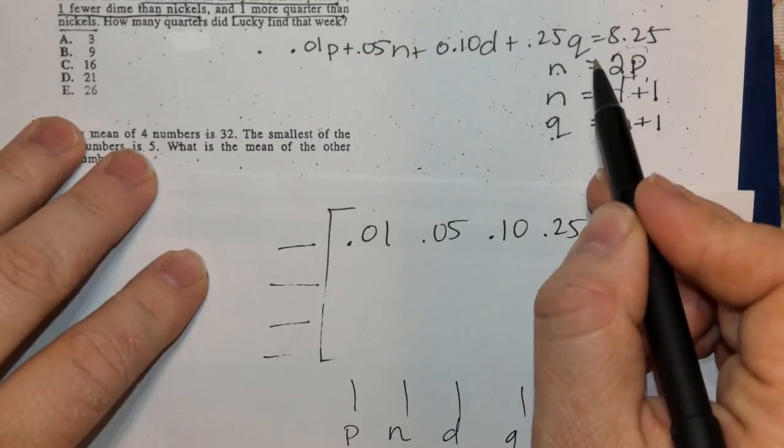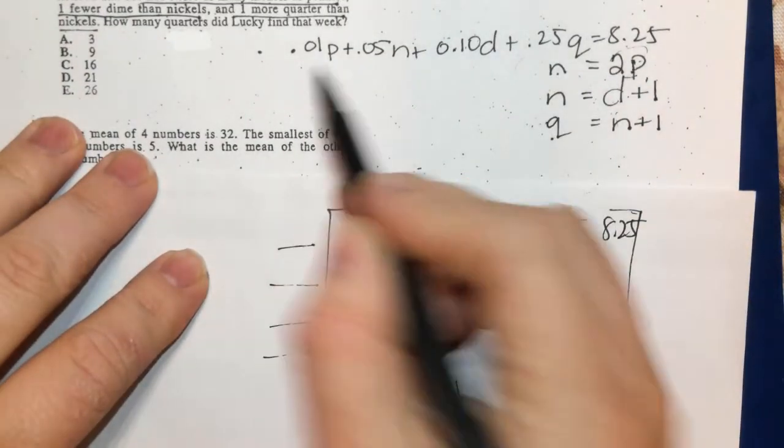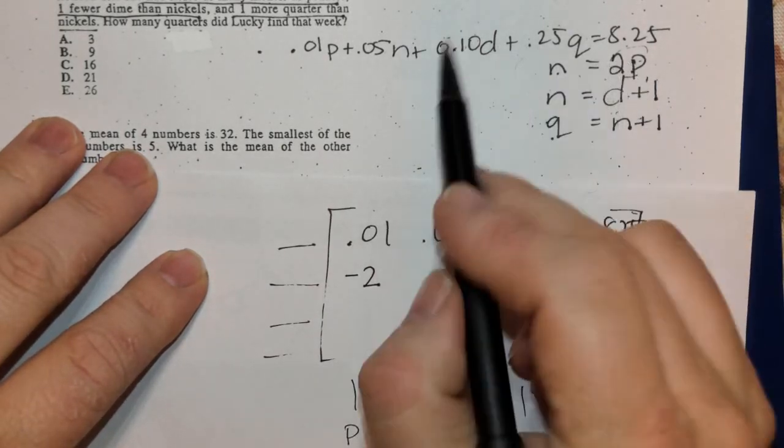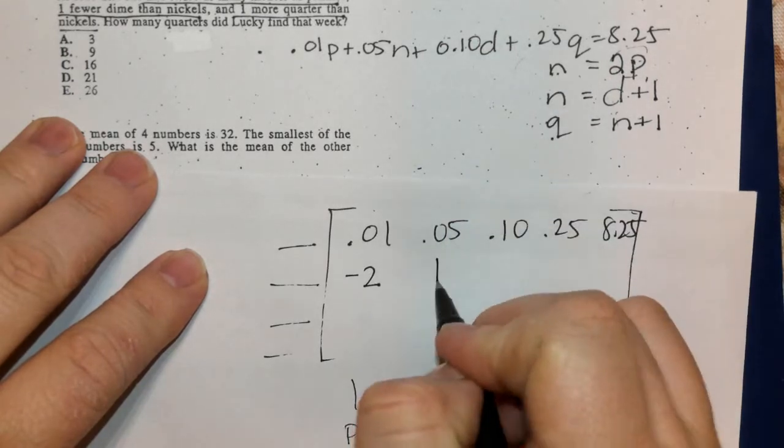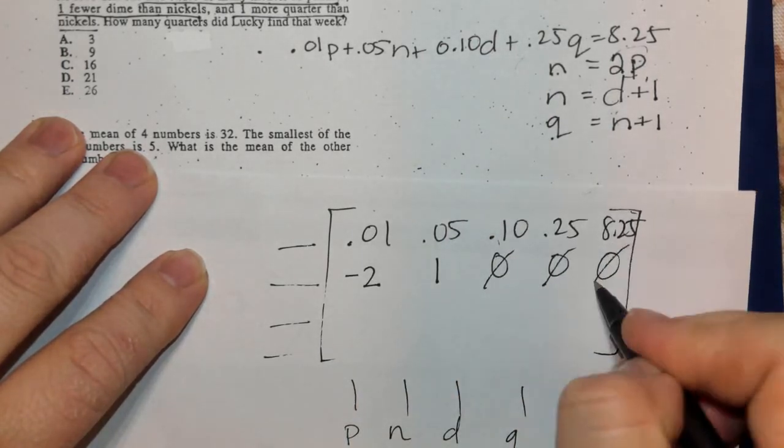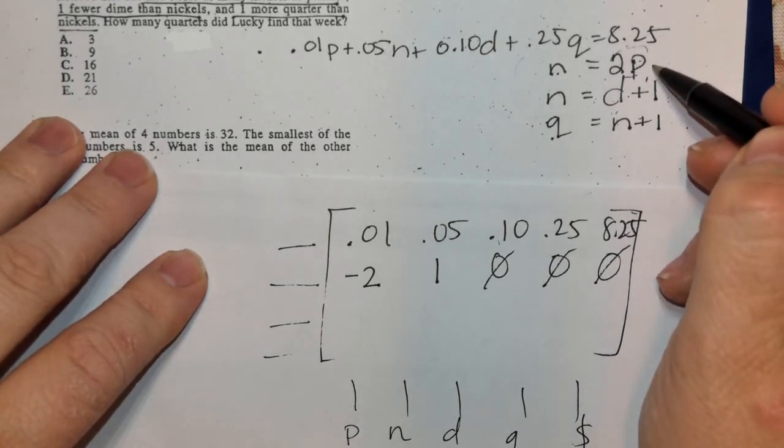So this is negative 2 for pennies, and 1N for nickels. There are no dimes, no quarters, and no additional numbers here.